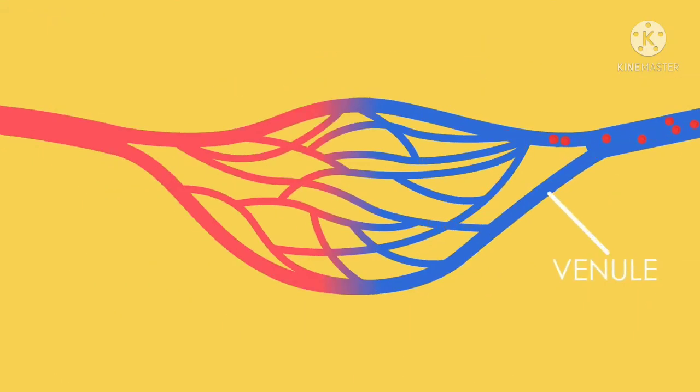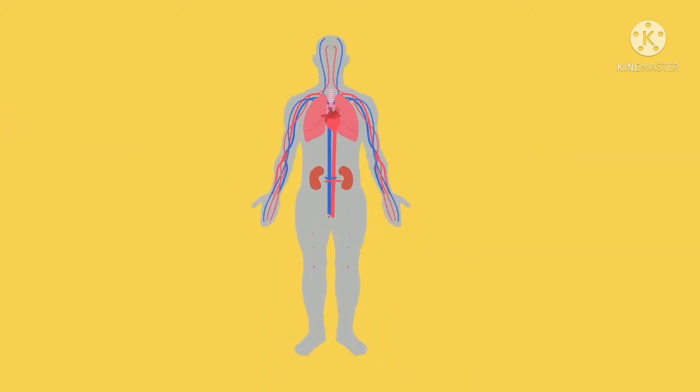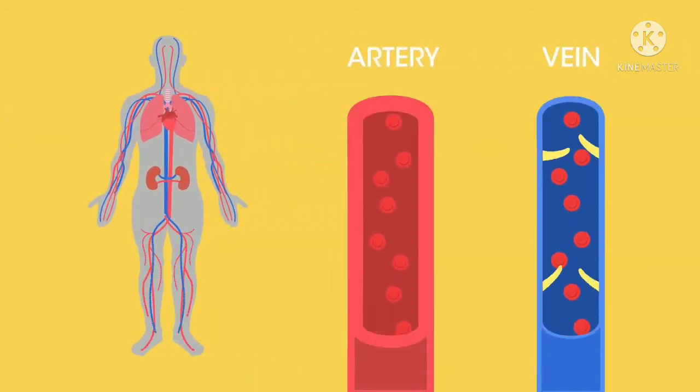Deoxygenated blood then travels away from the capillaries, into the venules, and then into the veins. Unlike arteries, veins have much thinner walls and valves that prevent deoxygenated blood from flowing backwards.